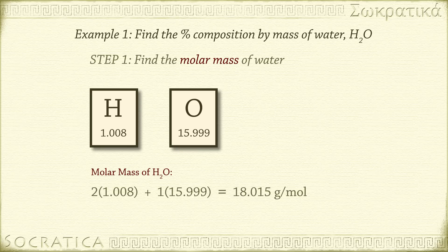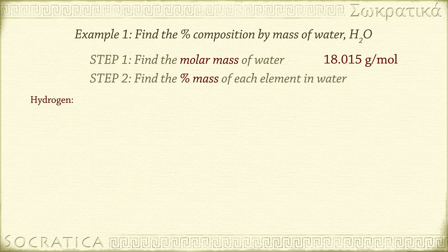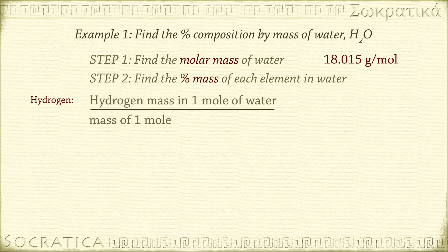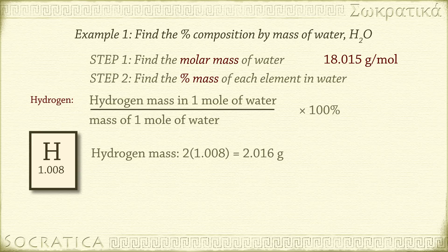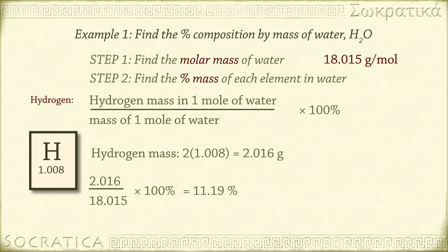Now, what percent of the total molar mass of water is due to hydrogen? The hydrogen percent composition is the mass due to hydrogen divided by the total molar mass, times 100%. In each water molecule, there are two atoms of hydrogen, so the total molar mass of hydrogen in a mole of water is 2 times 1.008 equals 2.016 grams. Divide it by the molar mass of water and multiply by 100%: 2.016 divided by 18.015 times 100% equals 11.19%.